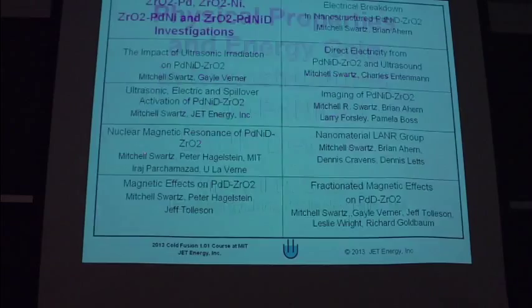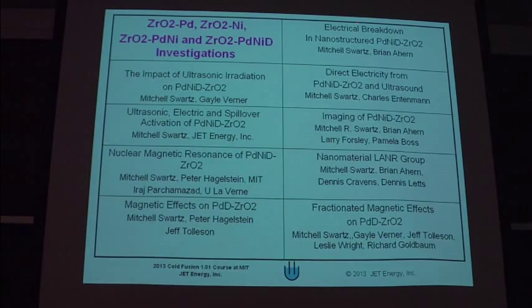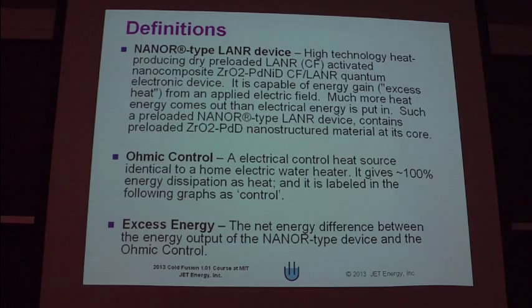There are a lot of people involved in this. We've done many studies looking at ultrasound, radiation, direct electricity production, electric breakdown initially, and imaging. The definition of a nanor is it is a dry, preloaded, two or four terminal device — some are four terminal because we're measuring the internal resistance. But it's essentially a two-terminal device capable of energy gain and excess heat from the applied electric field.